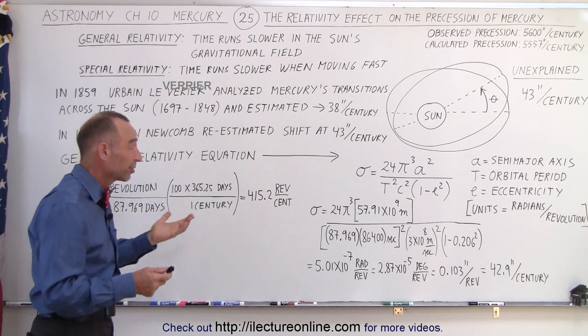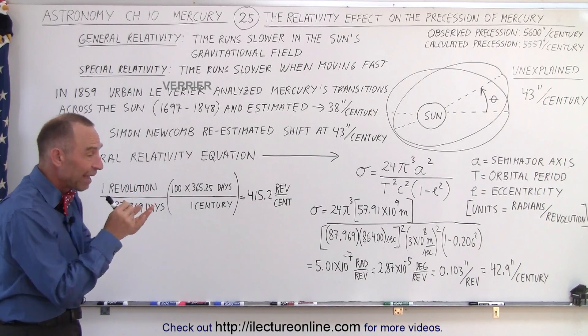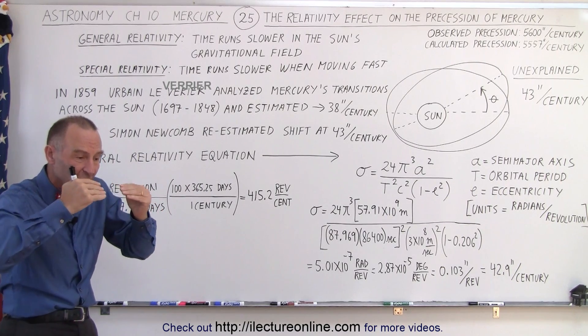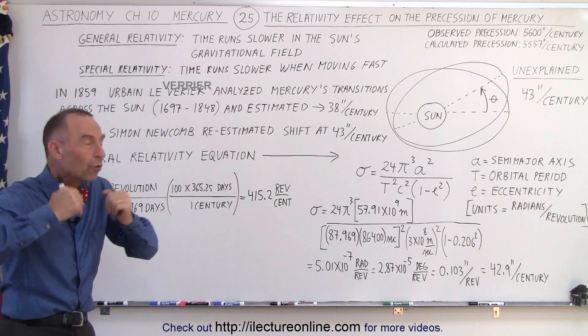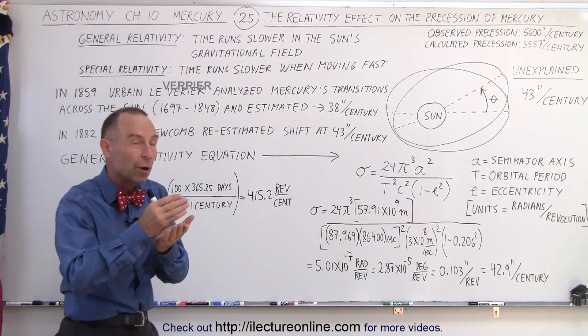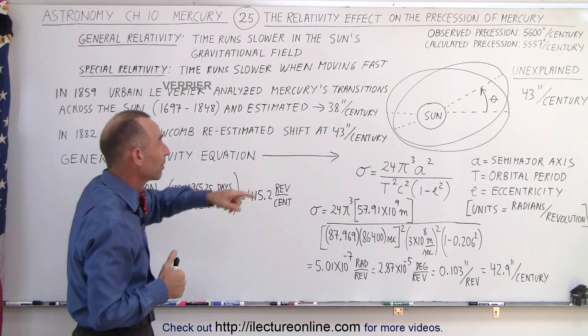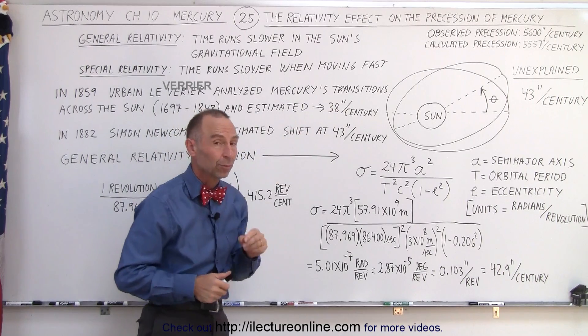So that's about close to 20 transitions that he looked at very carefully and based upon how the transition slowly changed over time, he was able to estimate that there was a discrepancy between the observed precession of Mercury and the calculated precession of Mercury of about 38 arc seconds per century.